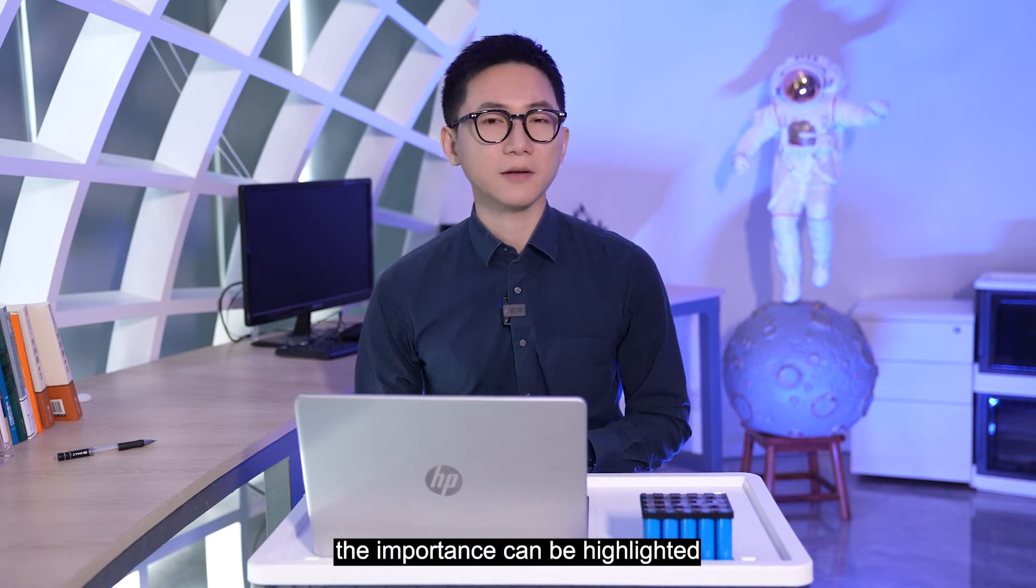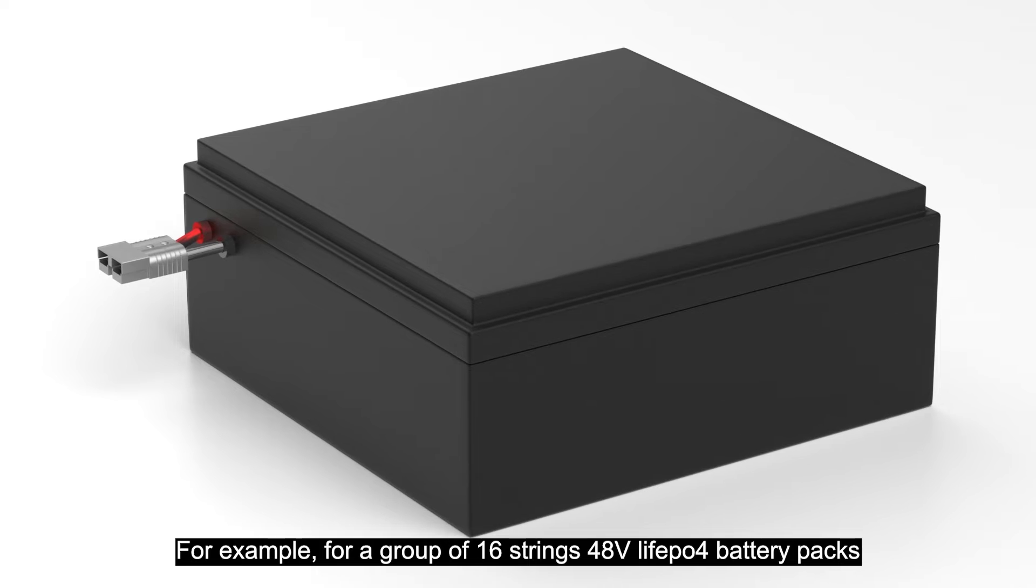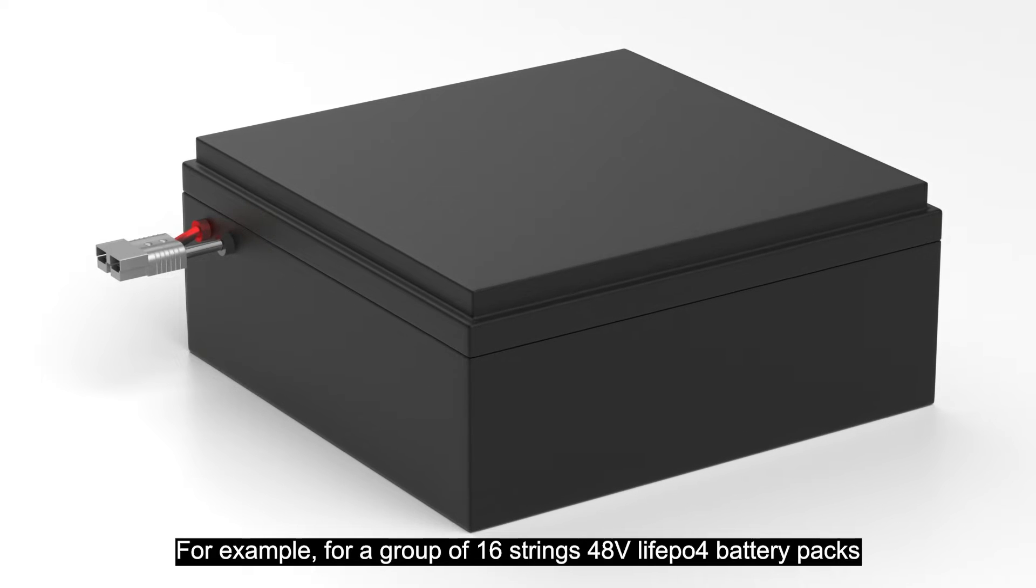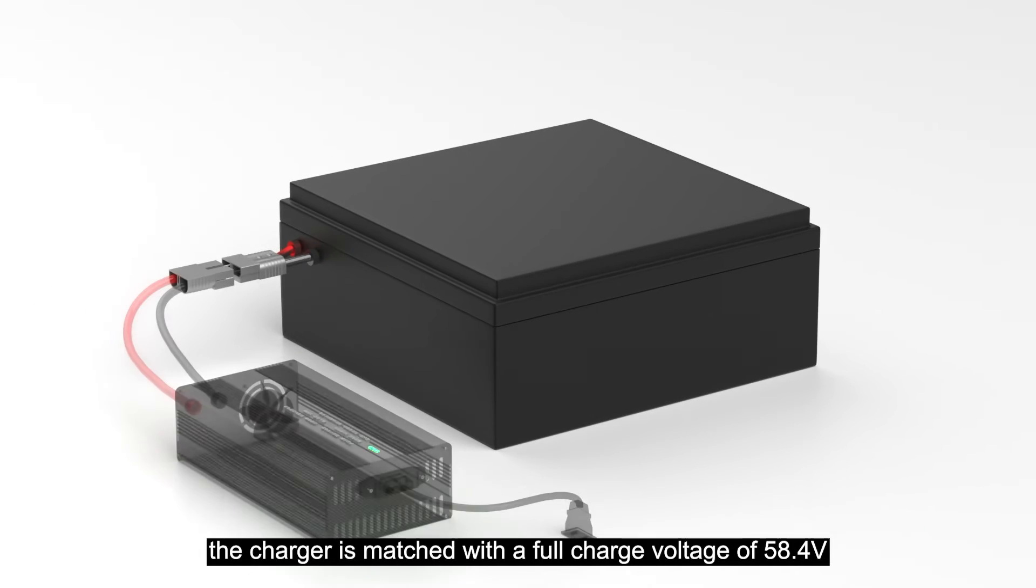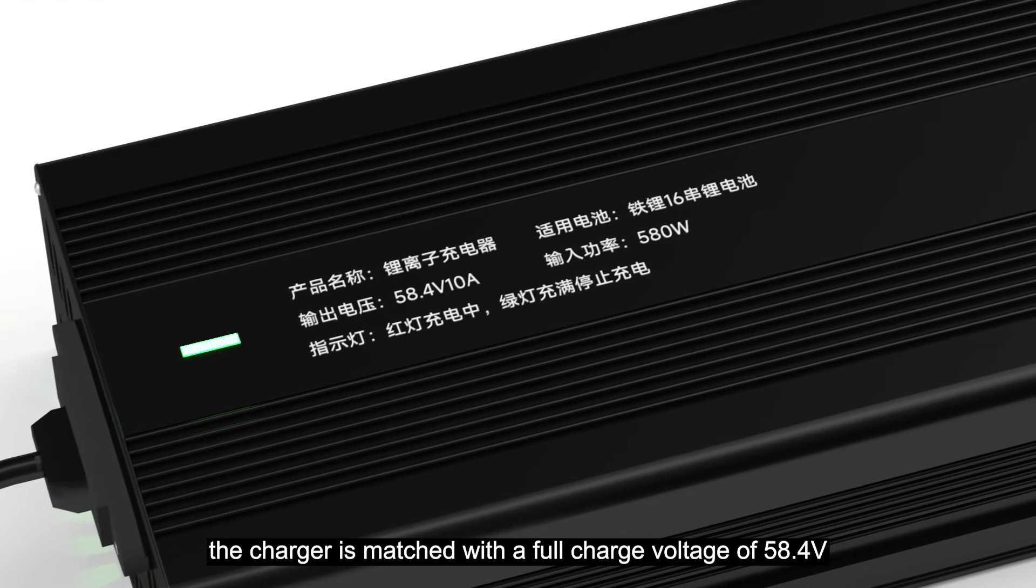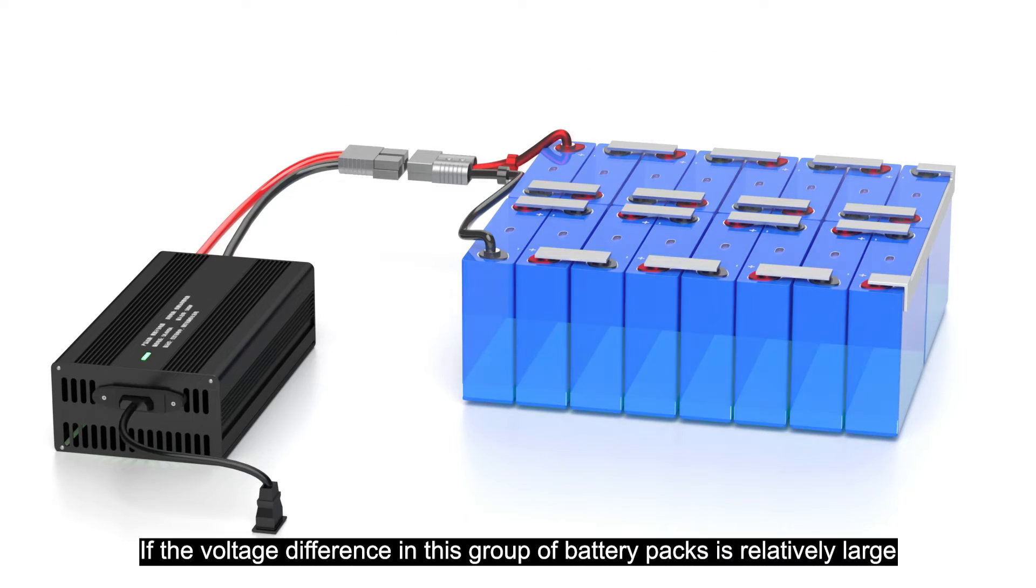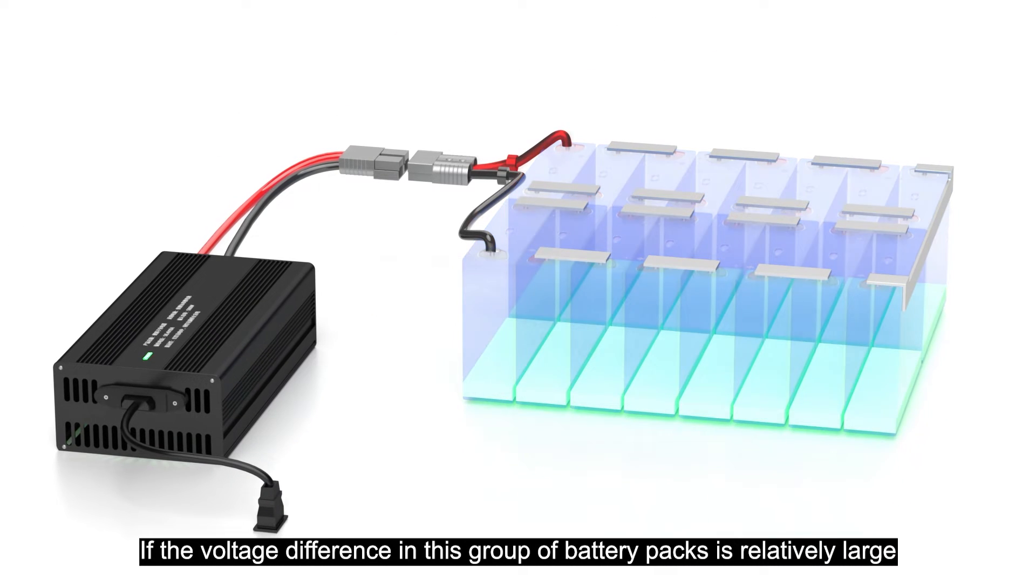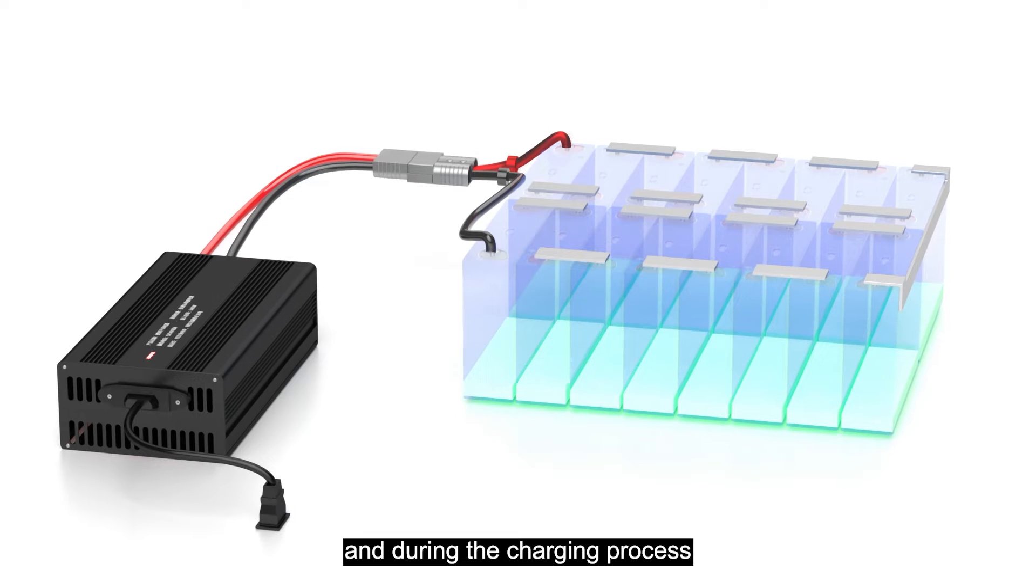For example, for a group of 16-string 48V lithium battery packs, the charger is matched with a full charge voltage of 58.4V. If the voltage difference in this group of battery packs is relatively large during the charging process,